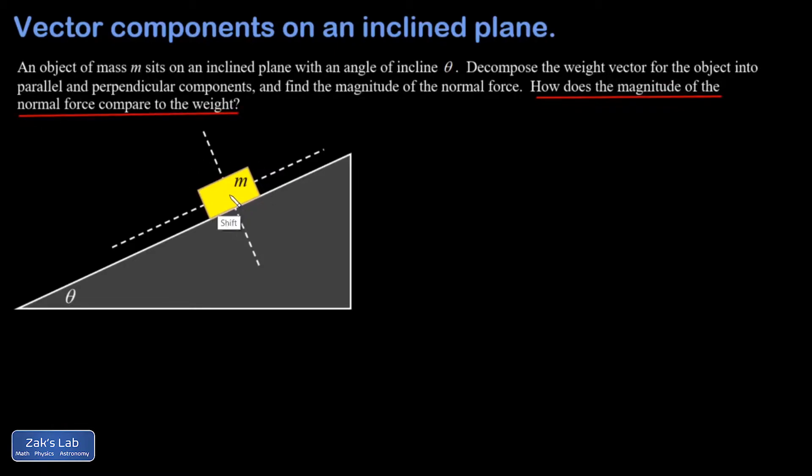We'll start by putting in the weight vector. The force of gravity is always straight down and has a magnitude of mg. To decompose this into perpendicular and parallel components, we need to find this angle right here. If you haven't seen it before, I'll hash out the trig real quick for how we prove it.